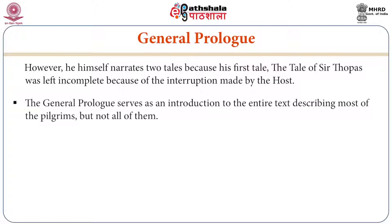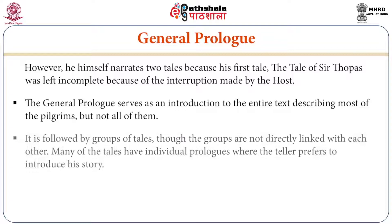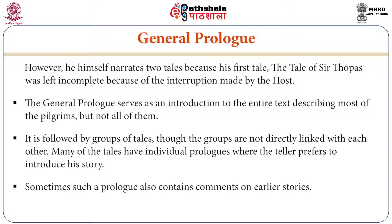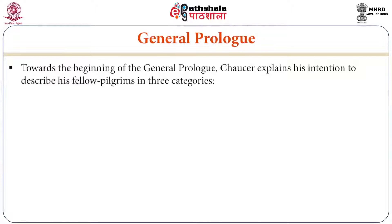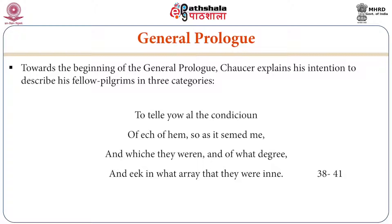The General Prologue serves as an introduction to the entire text, describing most of the pilgrims but not all of them. It is followed by groups of tales, though the groups are not directly linked with each other. Many of the tales have individual prologues where the teller introduces his story; sometimes such a prologue also contains comments on earlier stories. Towards the beginning of the General Prologue, Chaucer explains his intention to describe his fellow pilgrims in three categories, as stated in lines 38 to 41.